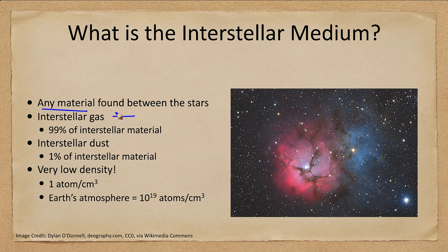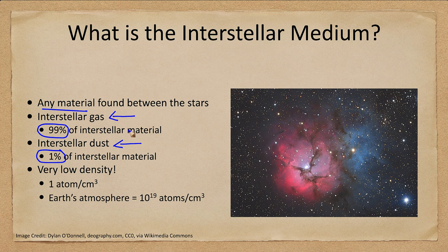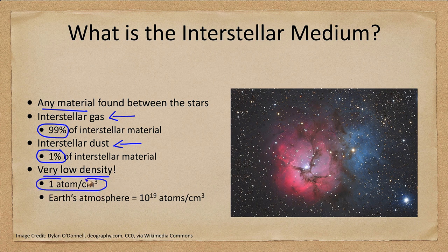There is gas between the stars which accounts for 99% of interstellar material, and there is dust which accounts for about 1% of the interstellar material. Gas is harder to see, while dust can be easier to see because of its dimming effects. This material is extremely low density, so even when we see nebulae such as the one pictured here, we're talking about densities in many areas on average of one atom for every cubic centimeter.